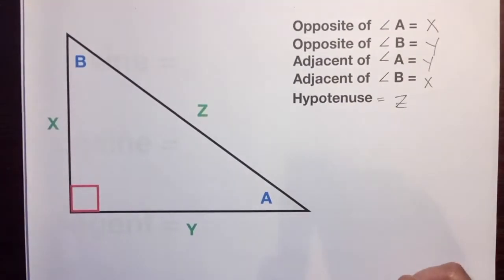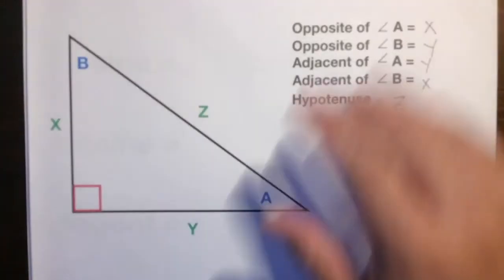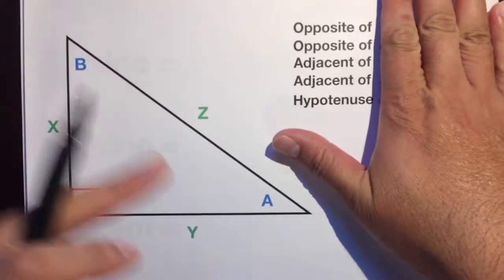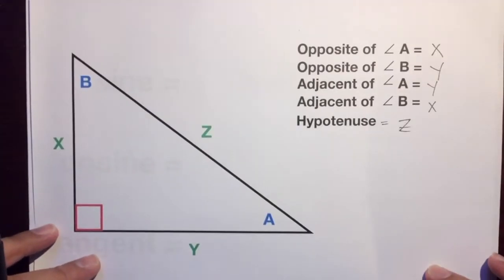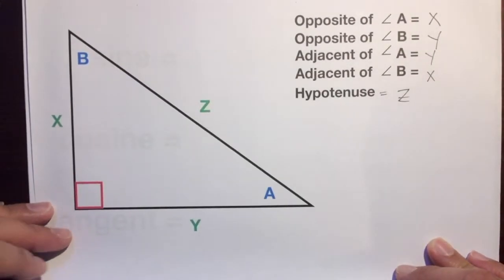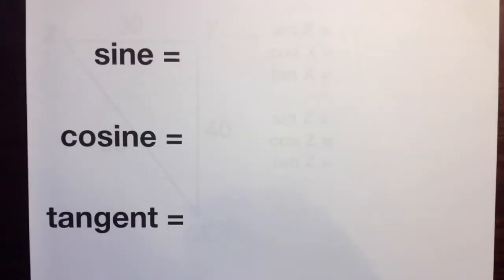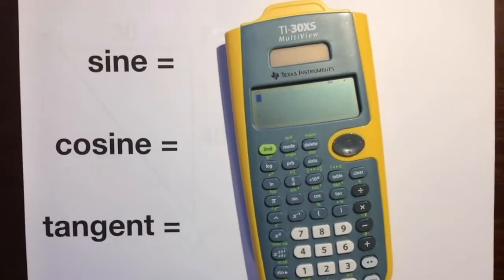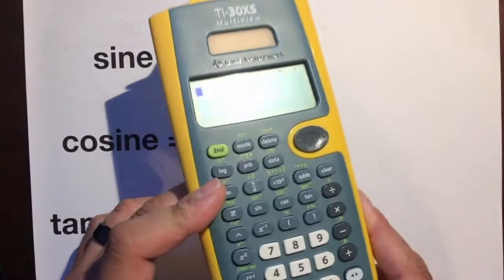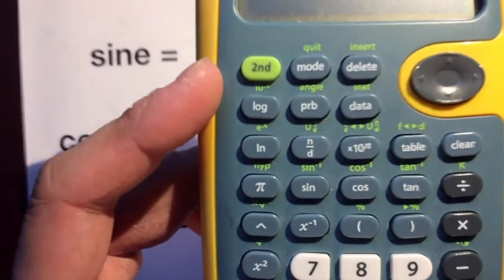Press pause, take five seconds and review these. Cover it up and see if you could quickly recall what hypotenuse, opposite, and adjacent mean. Now, to the real deal — trigonometric ratios. These are the three trigonometric ratios you are going to learn in geometry. These words might look a little familiar — they come from your calculator. You've seen these buttons on your fancy scientific calculator.